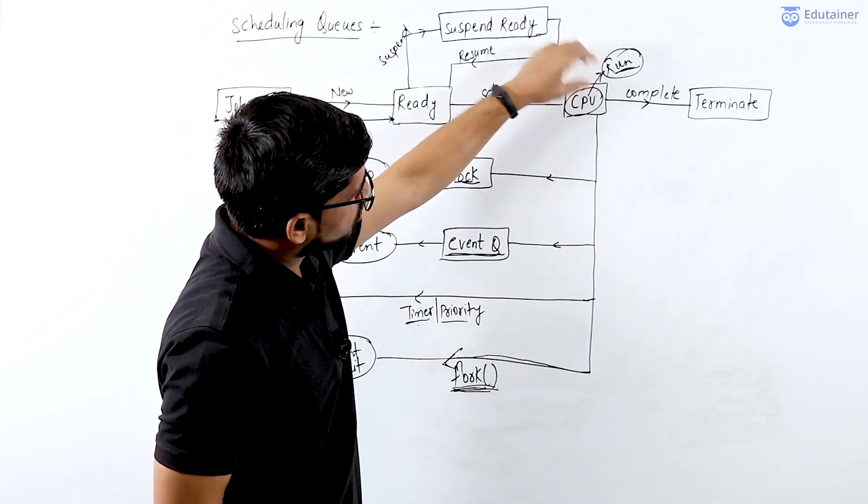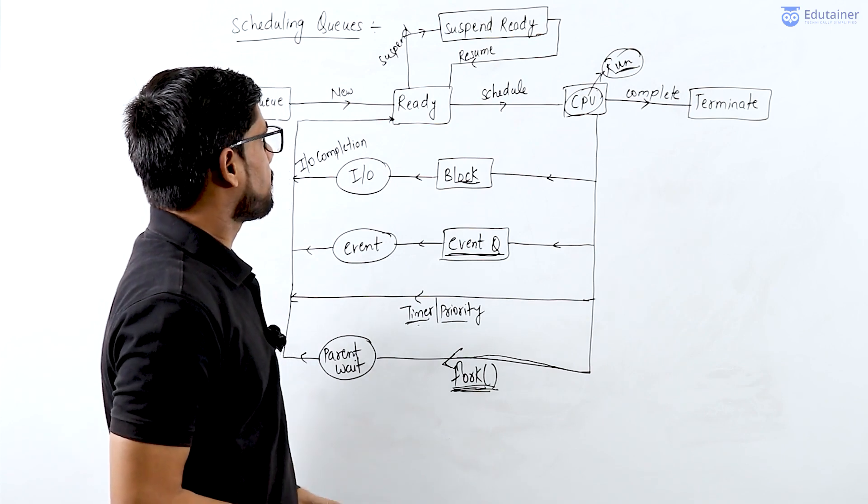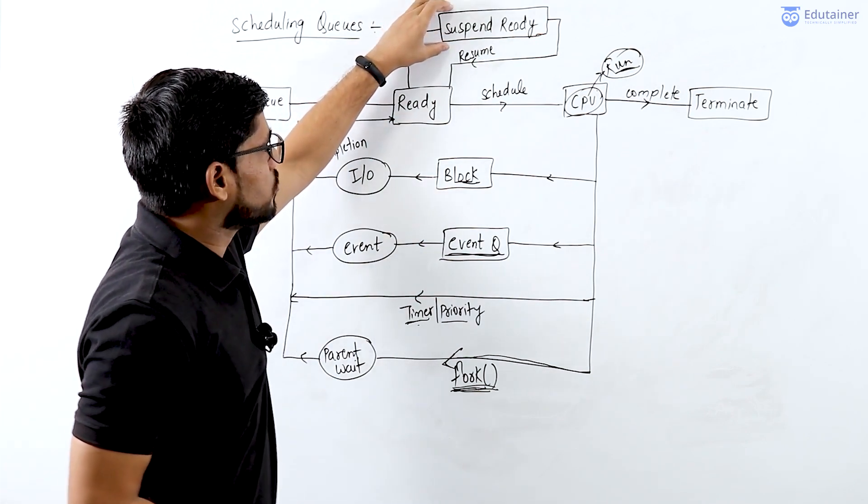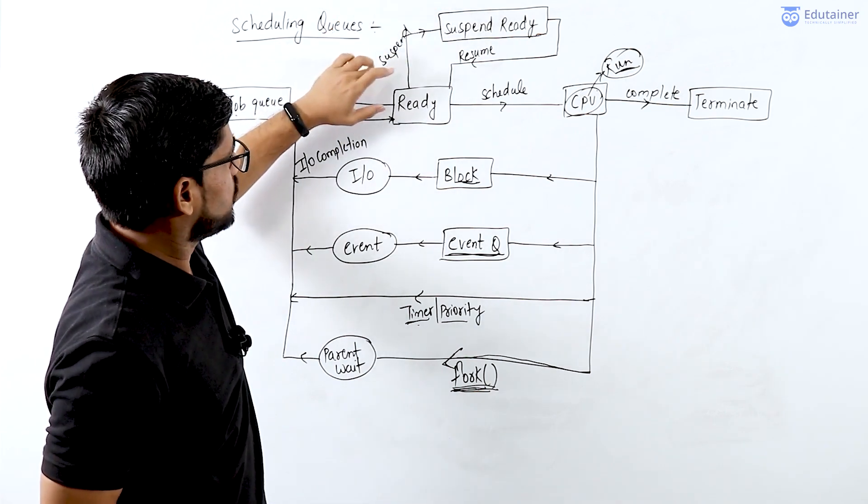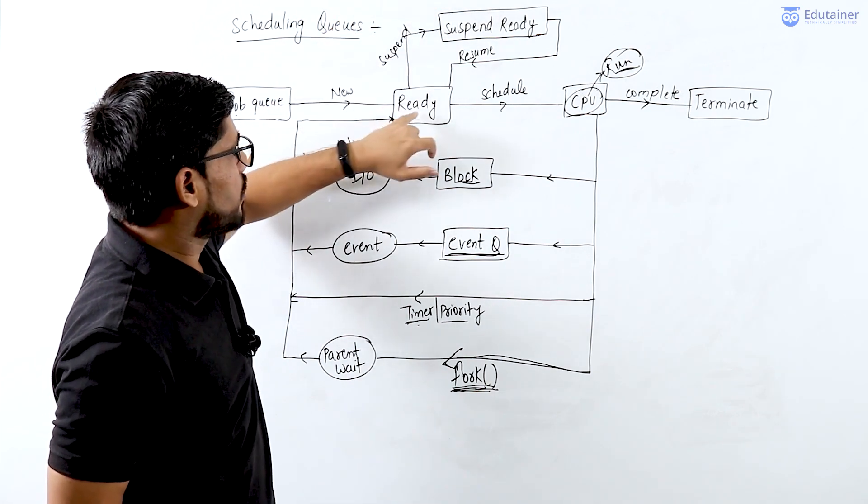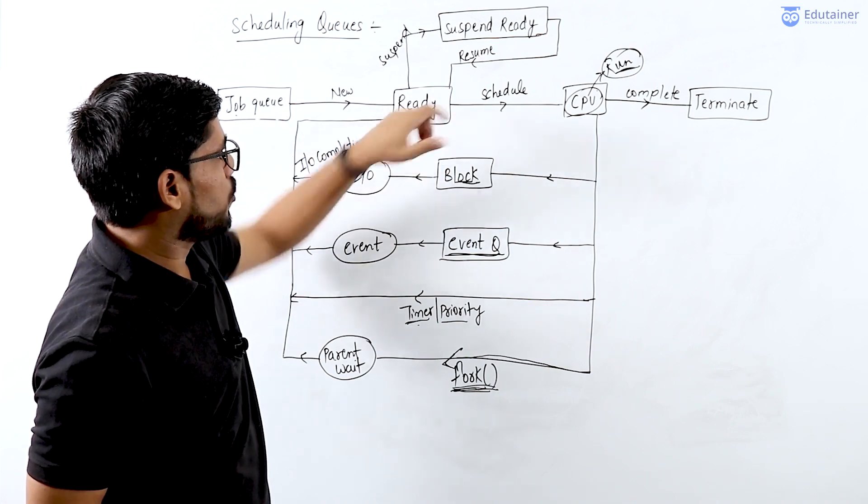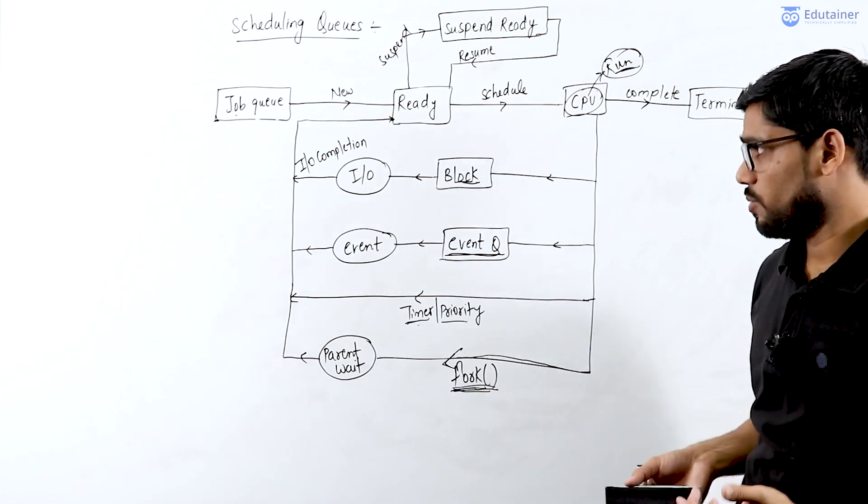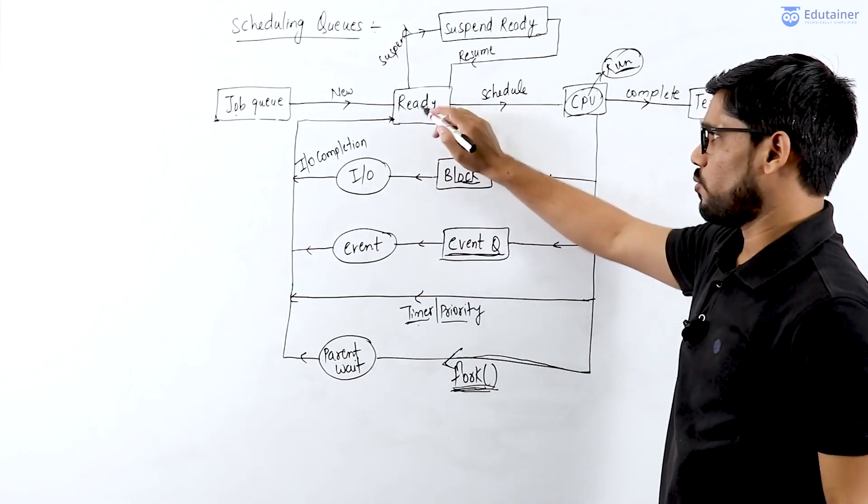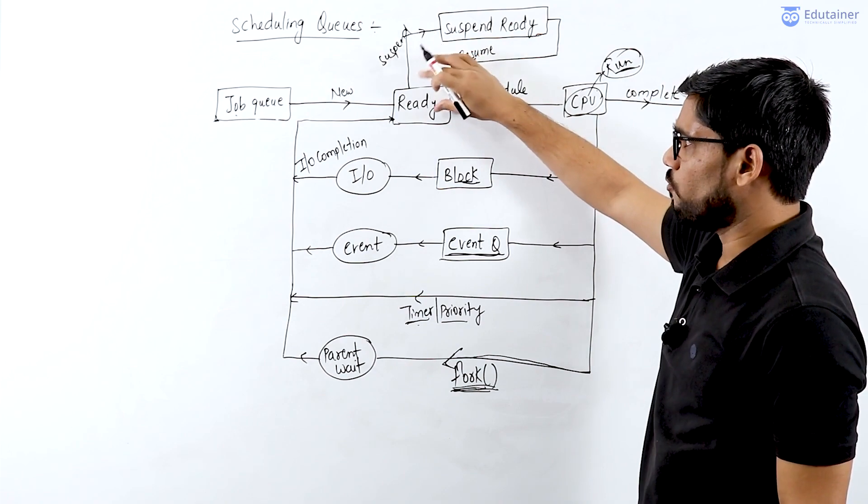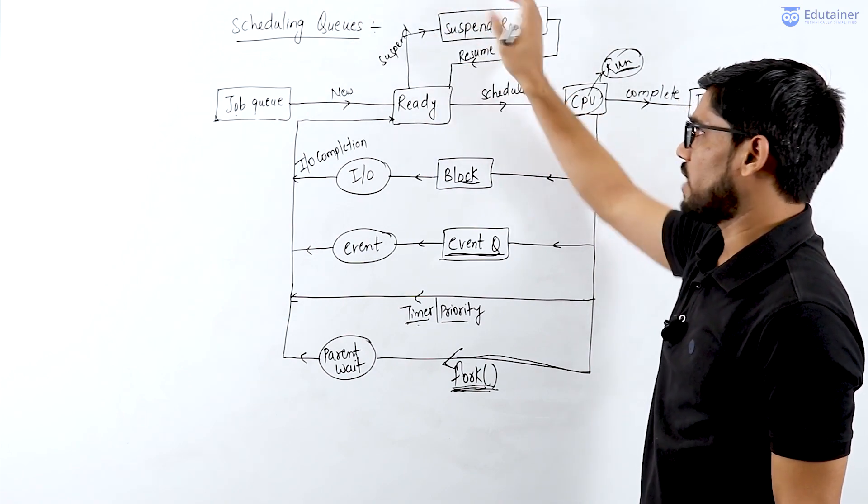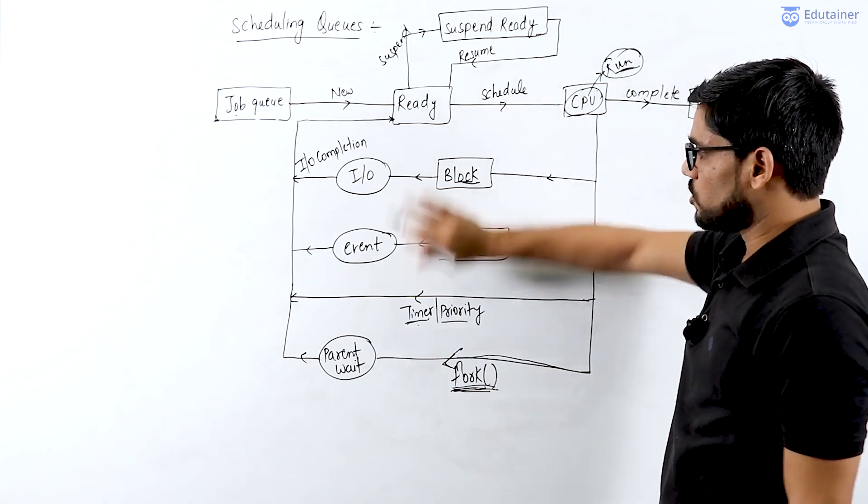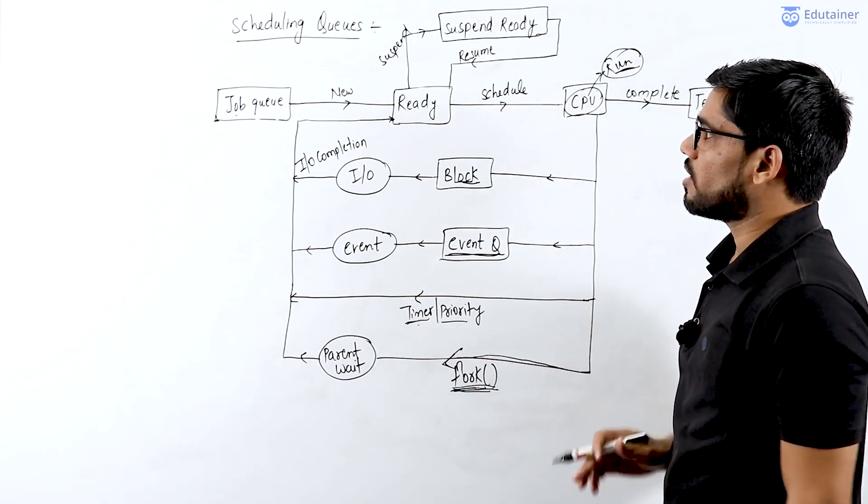One more state is suspend ready. Suspend ready comes into picture, as I discussed in the previous video, whenever there is no memory available or there is a lack of resources in the computer. Then a process will move from main memory to secondary memory, and it's called suspend ready or suspend wait. These are the job scheduling queues required for process transition.